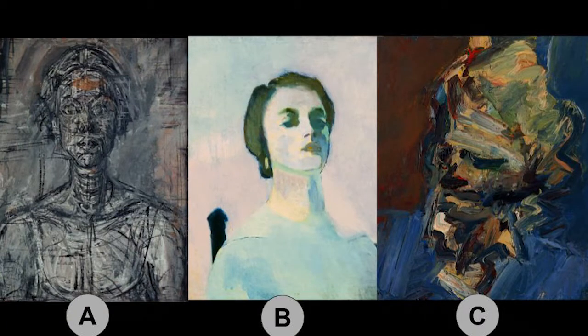Now let's pause and look at these three portraits: we've got Alberto Giacometti, Arthur Beecher Charles, and Frank Auerbach. You can see these artists only use color to convey emotion; they've also manipulated the application of the paint.